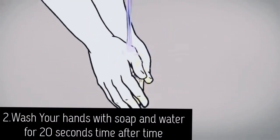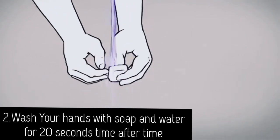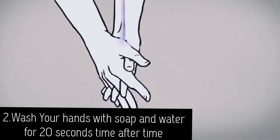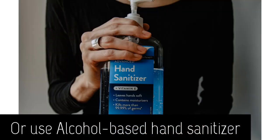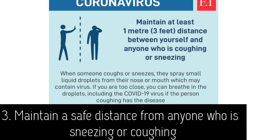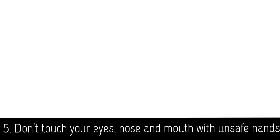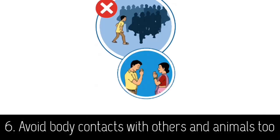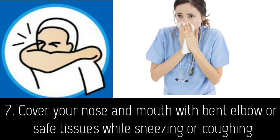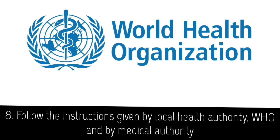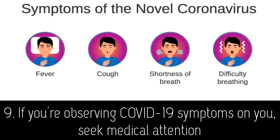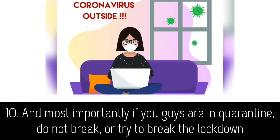Preventive measures for the disease include: social distancing; washing your hands with soap and water for 20 seconds frequently, or using alcohol-based hand sanitizer; maintaining a safe distance from anyone who is sneezing or coughing; staying at home and not contacting others if you're feeling unwell; not touching your eyes, nose, or mouth with unwashed hands; avoiding body contact with others and animals; covering your nose and mouth with a bent elbow or tissue while sneezing or coughing; and following instructions given by local health authorities and the World Health Organization. If you're observing COVID-19 symptoms, seek medical attention — and most importantly, if you are in quarantine, do not break the lockdown. Stay home, stay safe.